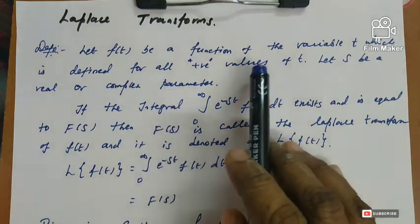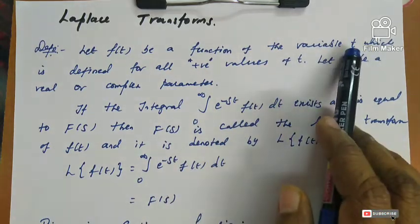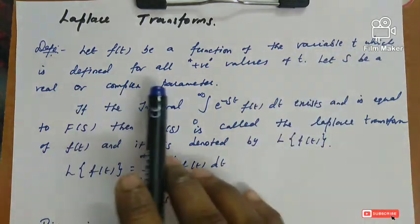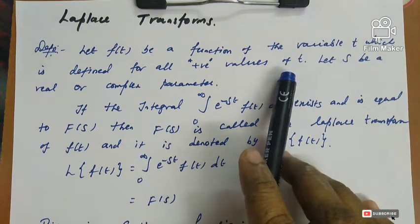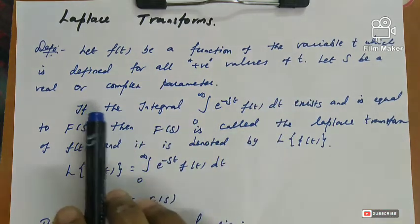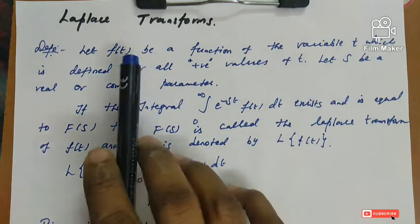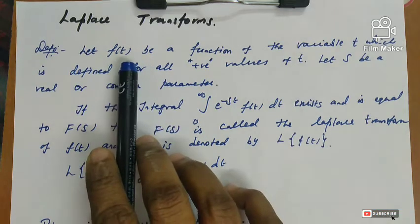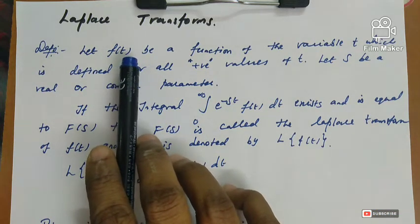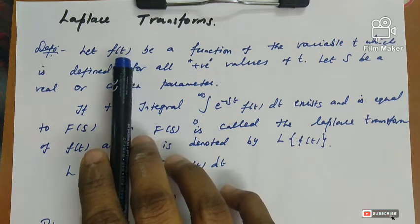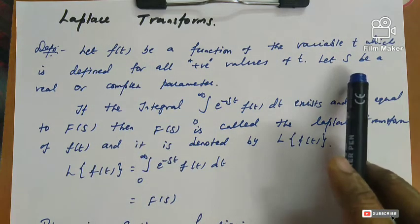Let f of t be a function of the variable t, which is defined for all positive values of t. Let s be a real or complex parameter. So, f of t is one function, t takes all positive values, and s is a real or complex parameter.